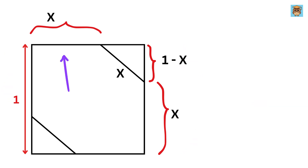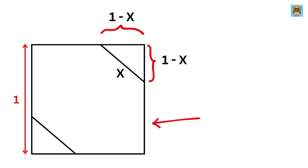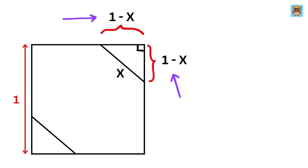The length of this side of the hexagon is also equal to X, and this full side equals 1. Therefore, the length of this remaining piece will also be equal to 1 minus X. This is a square, so the corner angle is 90°. That gives us a right-angle triangle with both legs equal to 1 minus X and the hypotenuse equal to X.